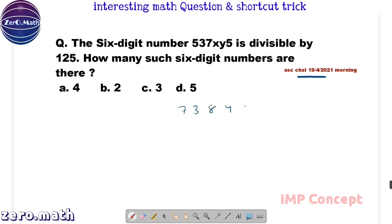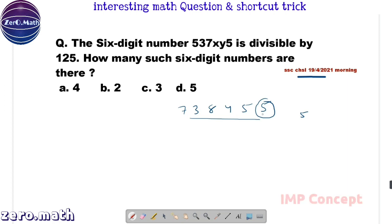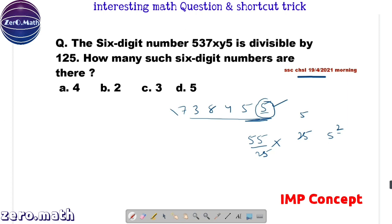Before we get into the problem, let's understand an important concept. Let's take one number randomly: 738455. If we have to check whether this number is divisible by 5, we check whether the unit digit is divisible by 5. Here the unit digit is 5, which is divisible by 5, so the entire number is divisible by 5. What if we have to check divisibility by 25, that is 5 to the power 2? We check the last 2 digits. Here the last 2 digits are 55, and 55 is not divisible by 25, which means this entire number is not divisible by 25.